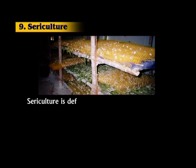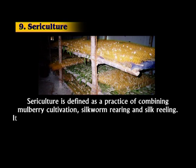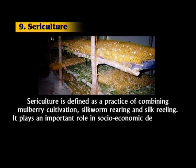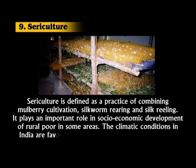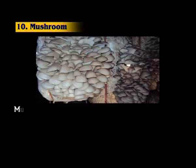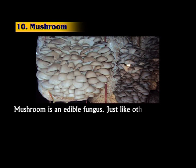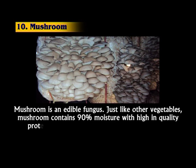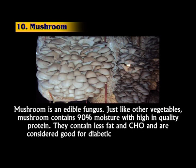Next is sericulture. Sericulture is defined as the practice of combining mulberry cultivation, silkworm rearing, and silk reeling. It plays an important role in the socio-economic development of the rural poor in some areas. The climatic conditions in India are favourable for luxuriant growth of mulberry and rearing of silkworms throughout the year. Next is mushroom. Mushroom is an edible fungus. Like other vegetables, mushroom contains 90% moisture and is high in quality protein. It contains less fat and carbohydrates and is considered good for diabetic and blood pressure patients.